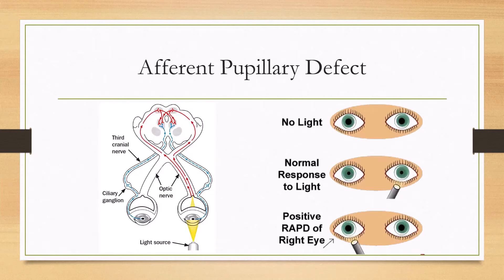For an afferent pupillary defect, we can illustrate this with the swinging flashlight test. When the flashlight is swung onto a normal eye, the optic nerve transmits signals bilaterally to both oculomotor nerves, which will constrict both eyes. However, if the optic nerve has a lesion such as optic neuritis, the light is not transmitted and neither eye will constrict.